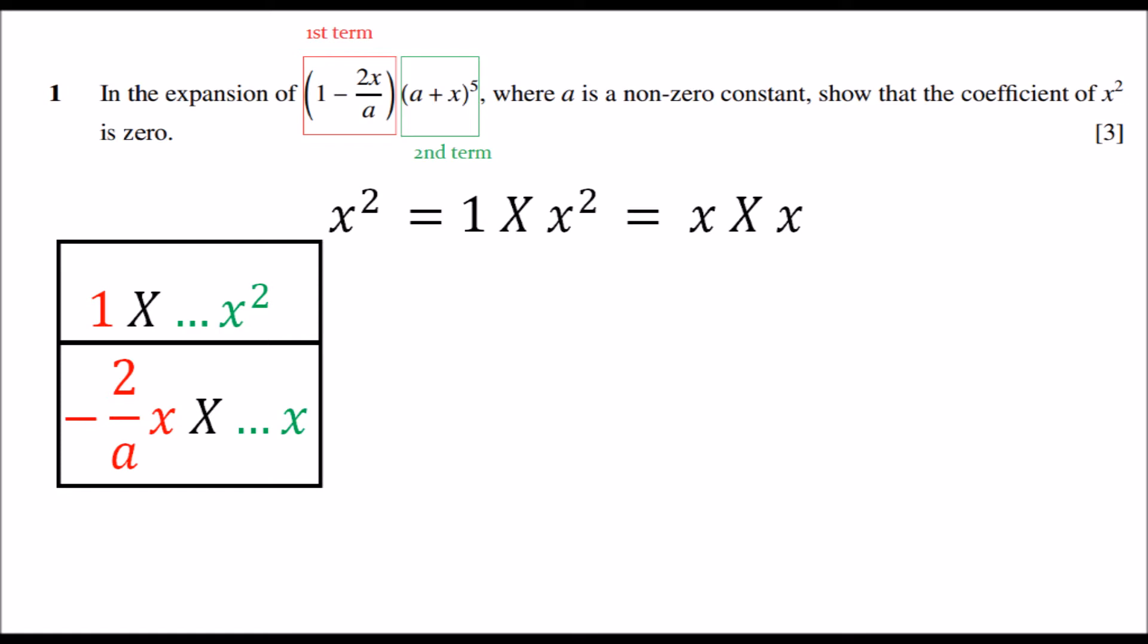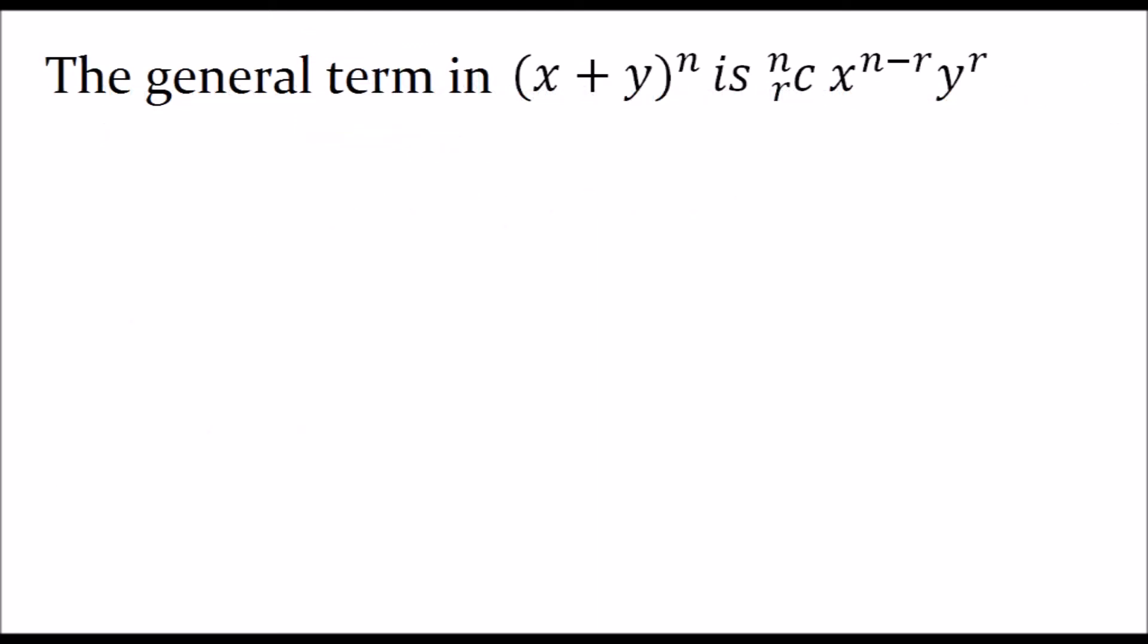Let's look at the term x plus y to the power n. The general term in the expansion is nCr times x to the power n minus r times y to the power r, where n is the power to which the expansion is raised to, nCr is the combination symbol used in statistics, and r is the value which will give the desired terms.